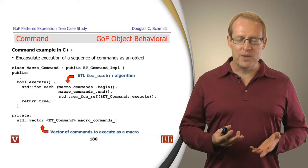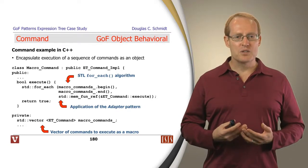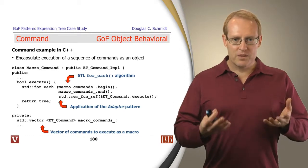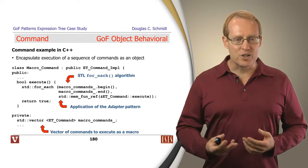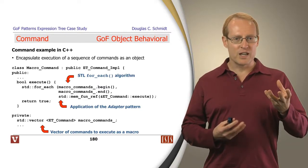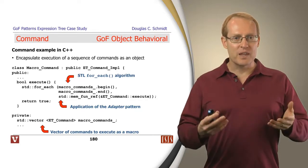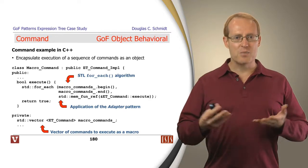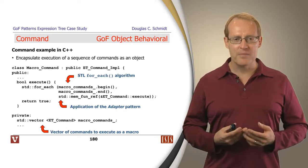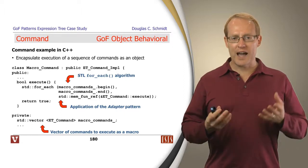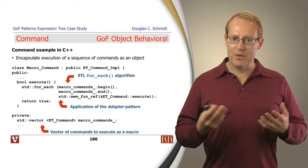The mem_fun_ref adapter is a way of taking something meant for functors and passing pointers to member functions to the for_each algorithm — this illustrates the adapter pattern. For_each doesn't understand the concept of member functions; it understands functors. The mem_fun_ref adapter converts a pointer to a member function into something the for_each algorithm expects as a functor. The basic intent of the adapter pattern is to allow classes or objects to work together when they weren't intentionally designed to work together — much like a hardware adapter for plugging your computer into a different type of wall socket when you travel overseas.